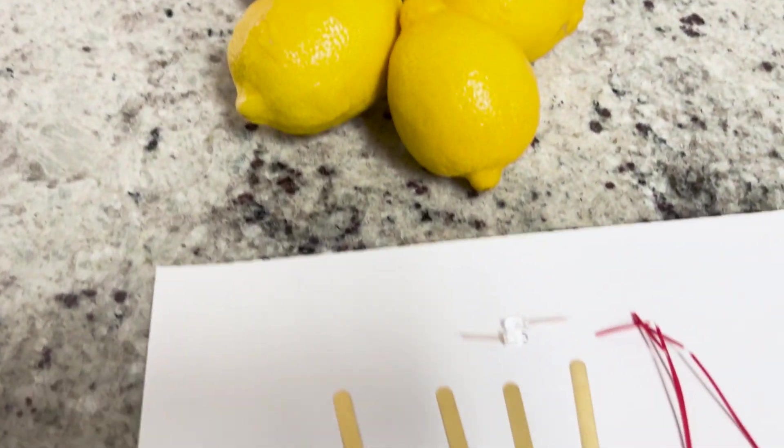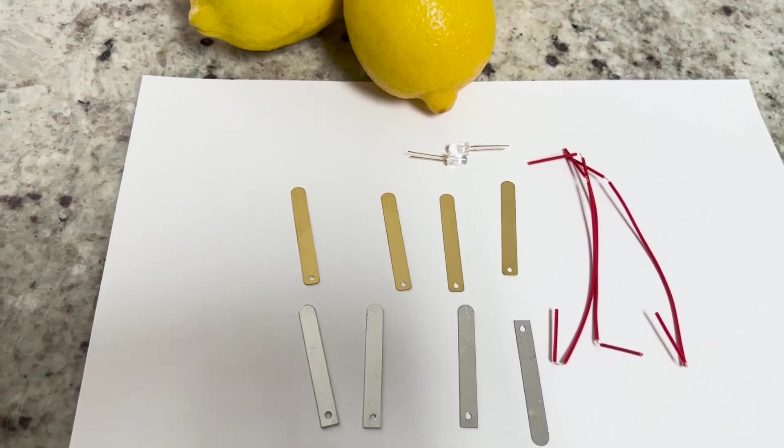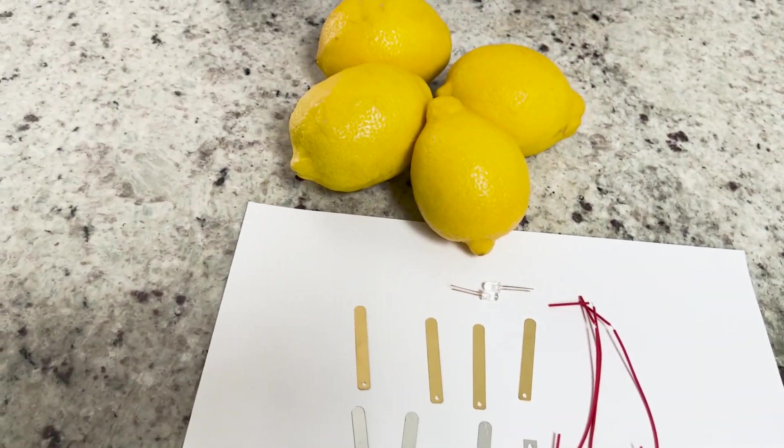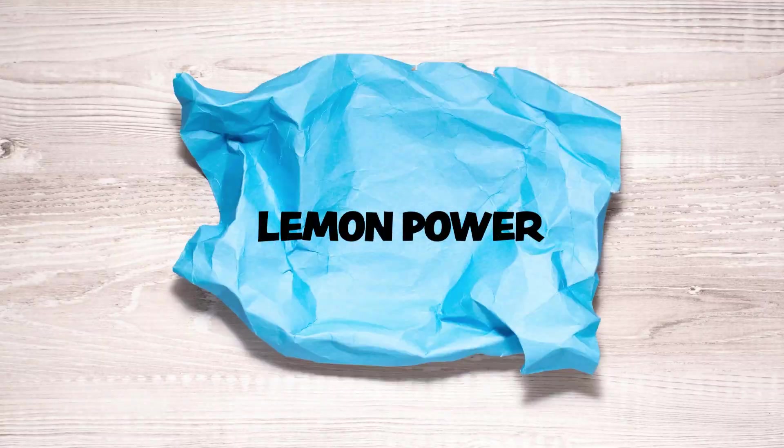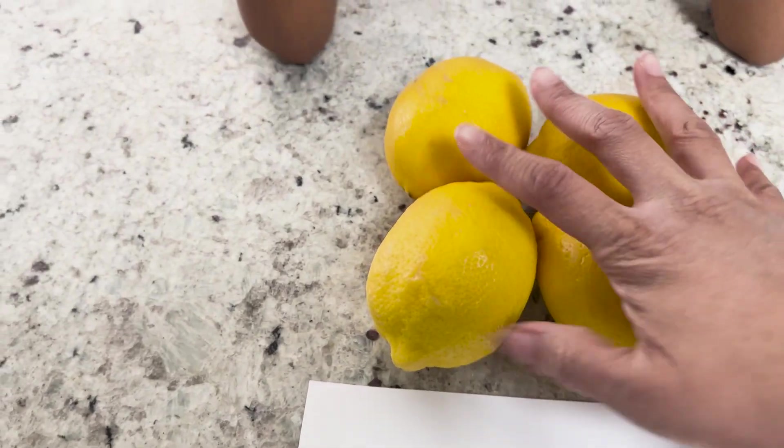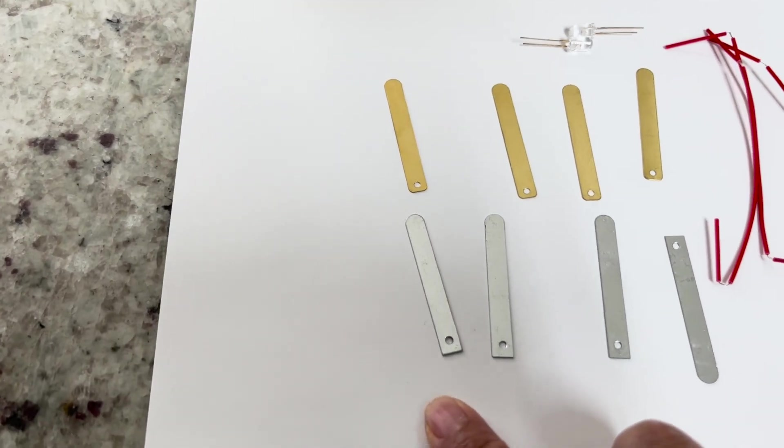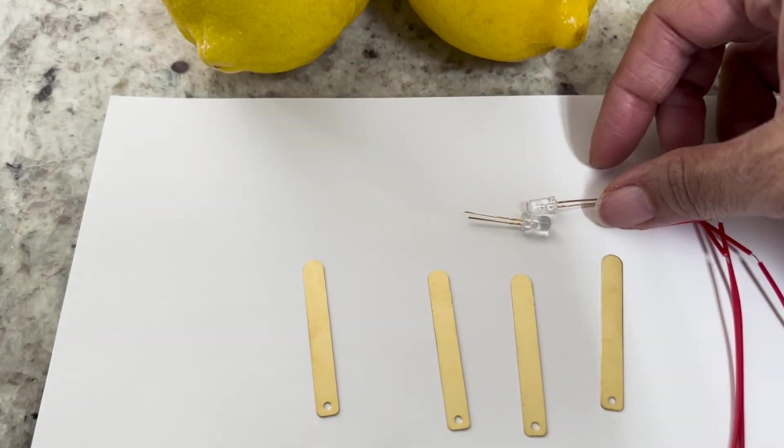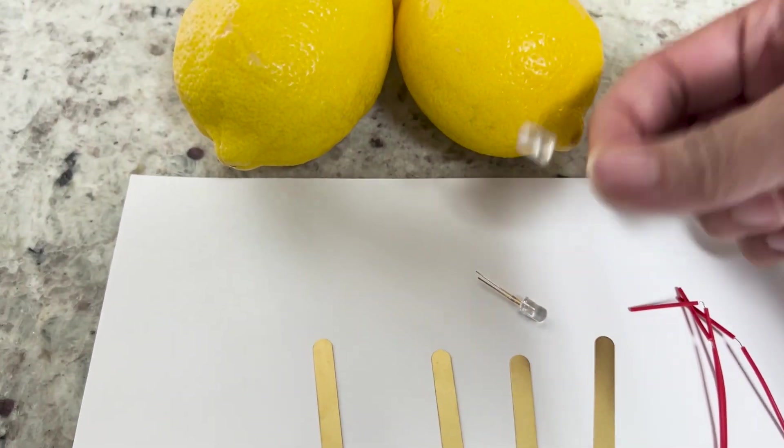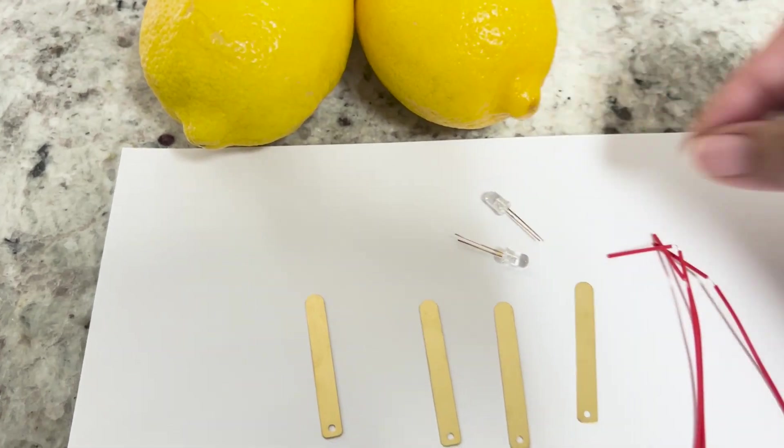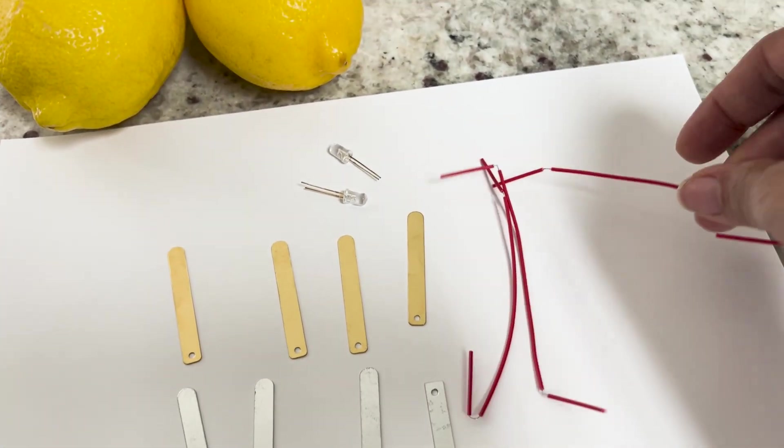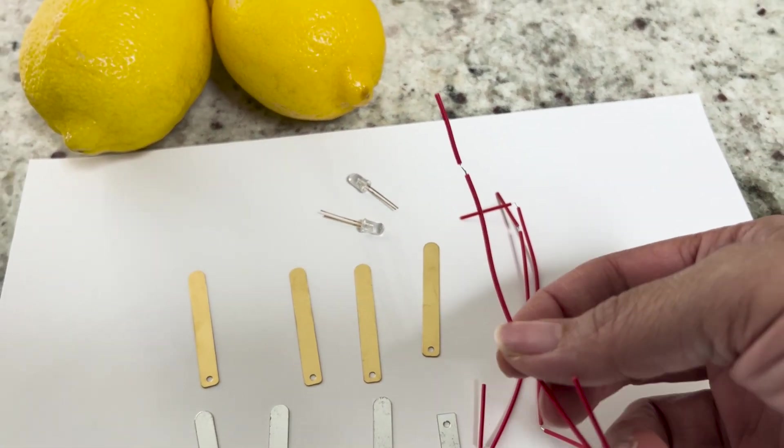We have to connect some wires to it. I'm calling this science experiment lemon power! You're going to need some lemons, about four. You need some copper plates and some zinc. We have two LED lights because we're going to turn on the lights with these guys. And then some wires to connect the positives and negatives.